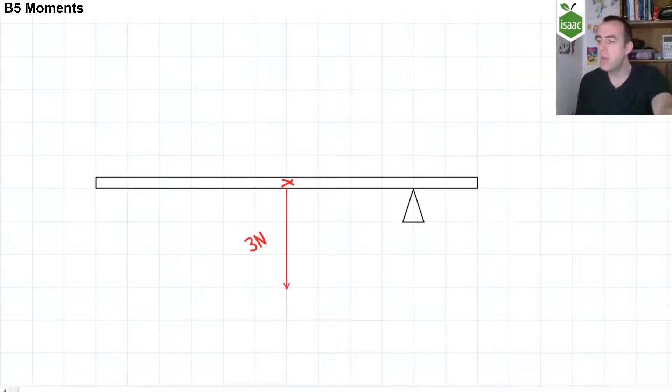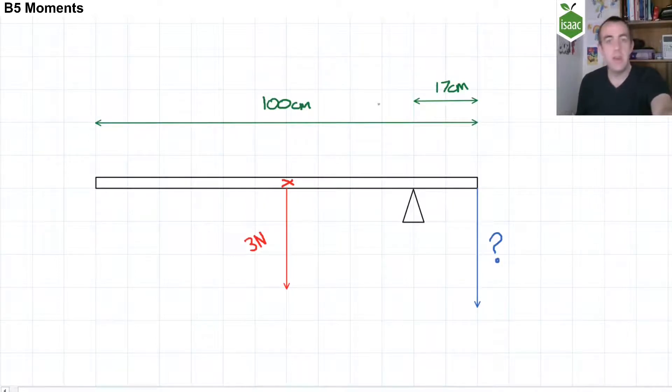But what if the numbers are not quite so convenient? So I've modified the picture now so that the pivot is 17 centimetres from the edge of this beam, but the beam itself is 100 centimetres long, and has a weight of three newtons.